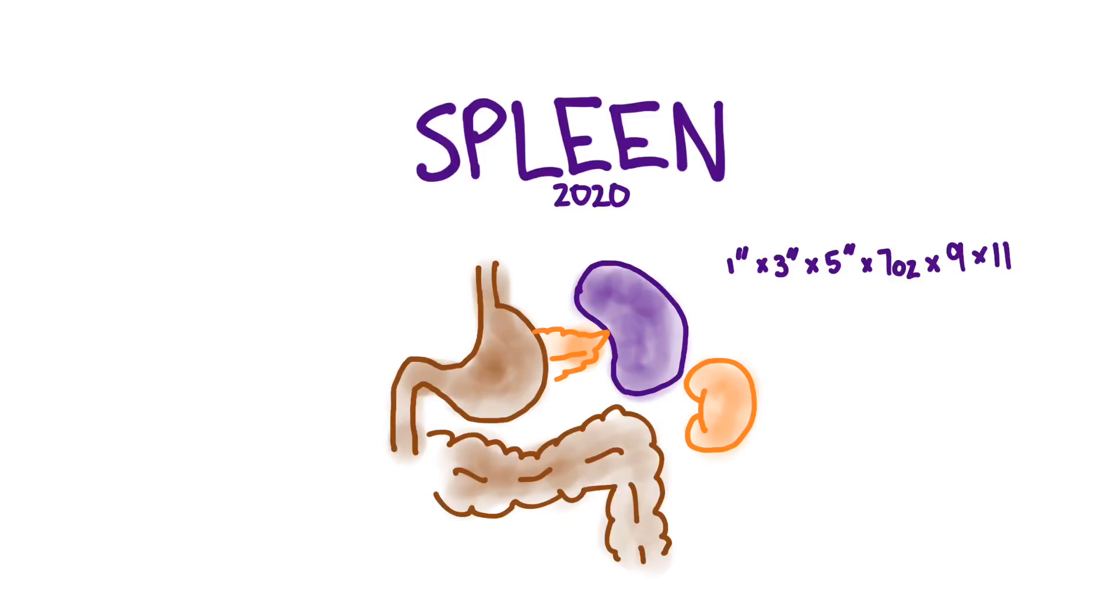And so you can see we've got this very helpful mnemonic 1-3-5-7-9-11 that gives us some details on it. Now the spleen size is actually very dependent on the age and height of the individual. So there are tables for calculating what's a big spleen versus a normal spleen. But this is a good estimate.